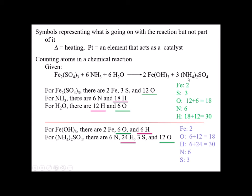Moving on to ammonium sulfate — another set of parentheses. For nitrogen: three times two times one is six nitrogens. For hydrogen: three times two times four gives me 24 hydrogens. For sulfur: three times one gives me three sulfurs. For oxygen: three times four gives me 12 oxygens. So on the product side, iron is only in one place — two irons. Oxygen appears in two places: six from iron(III) hydroxide and 12 from ammonium sulfate, adding up to 18.